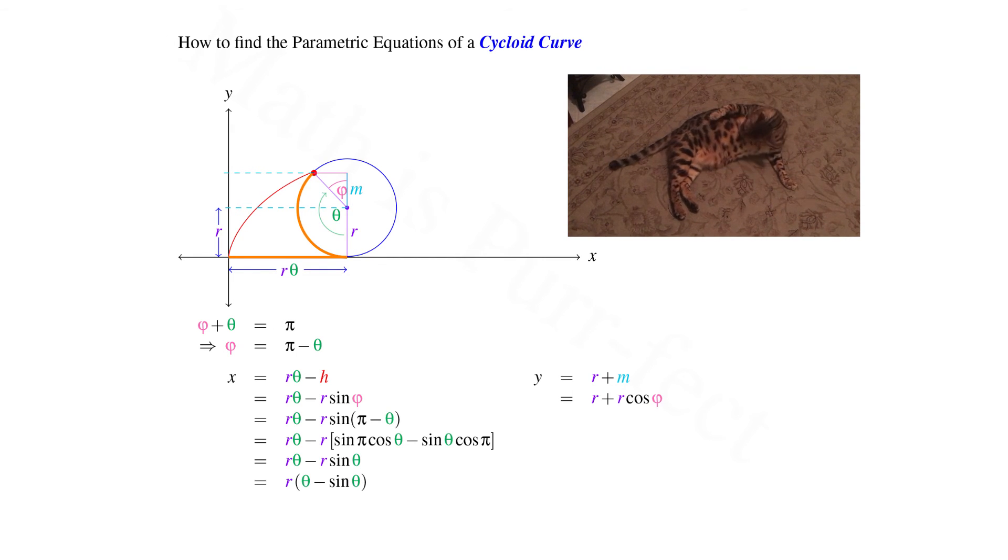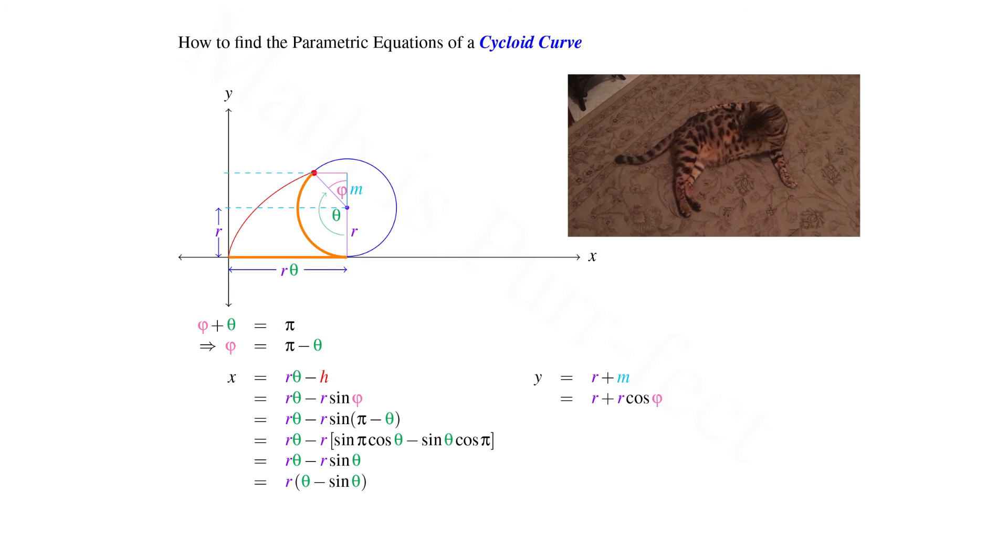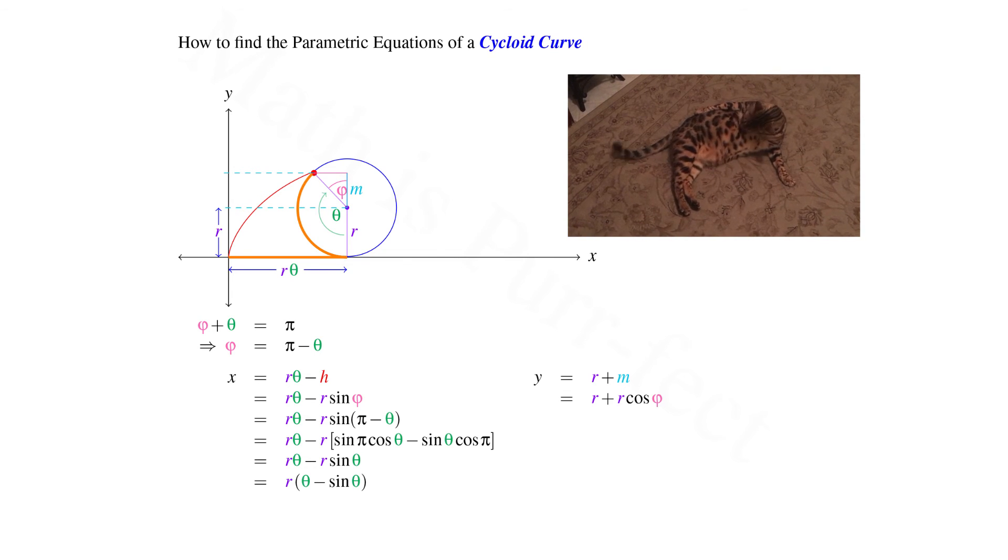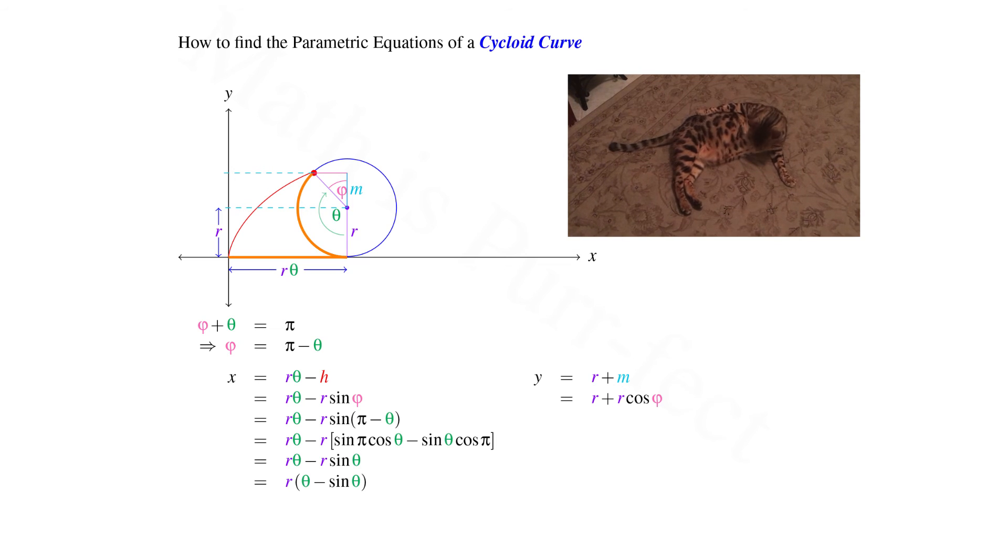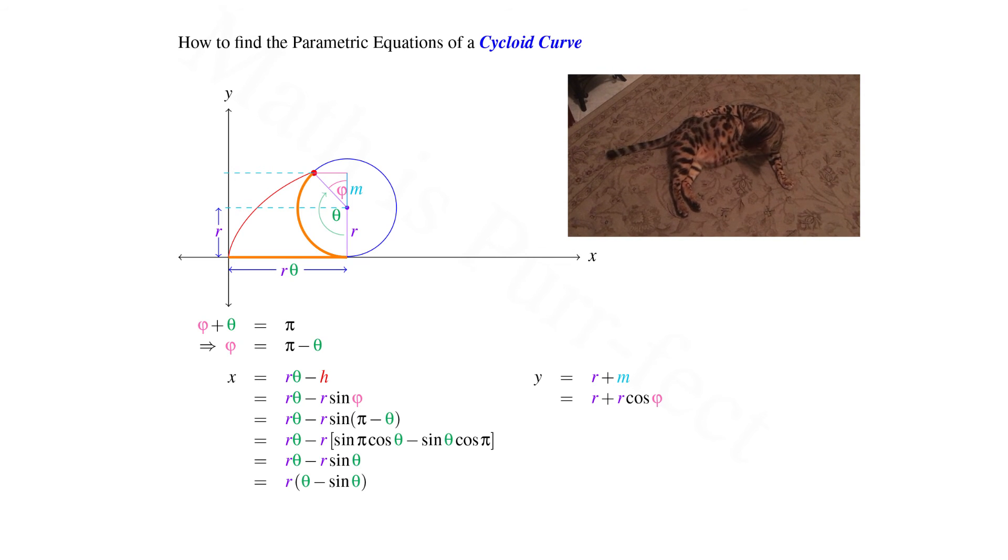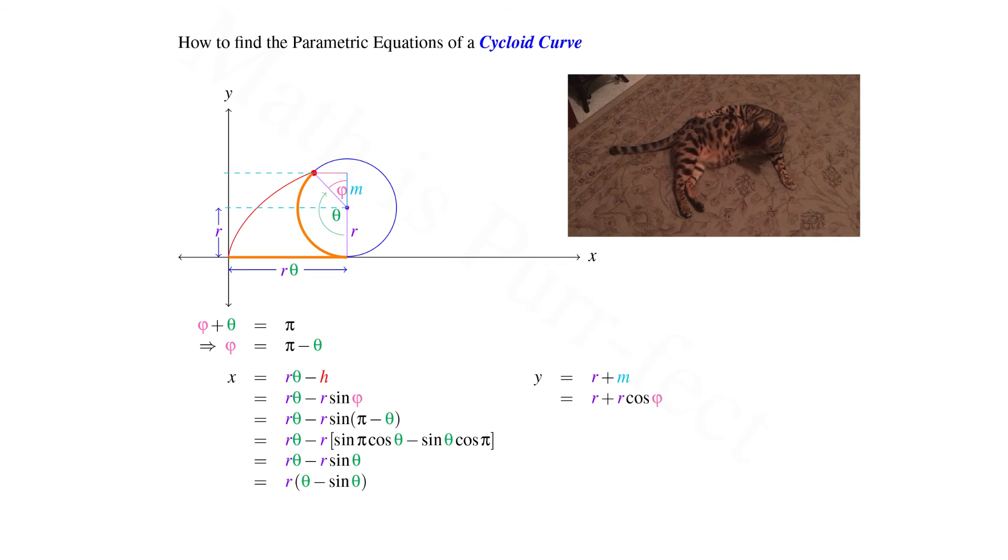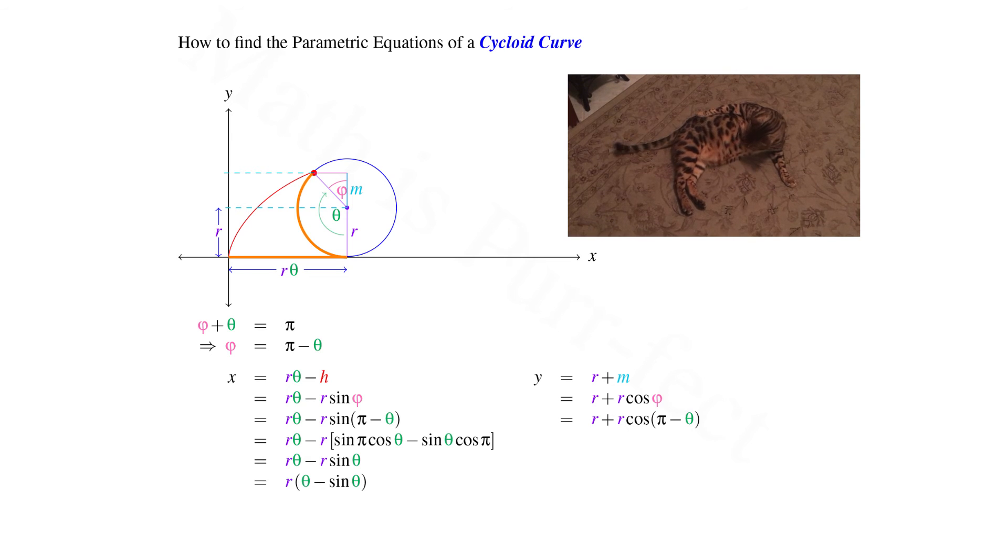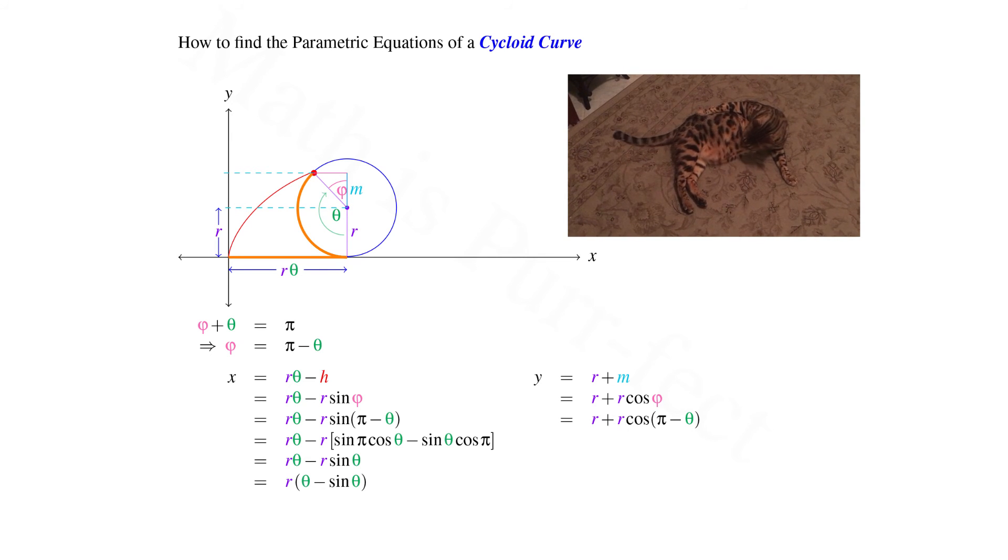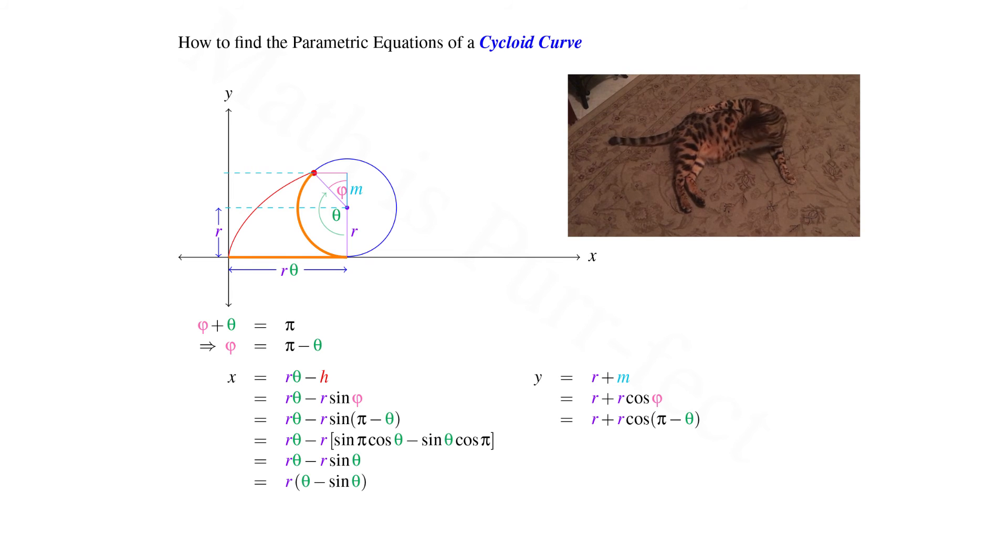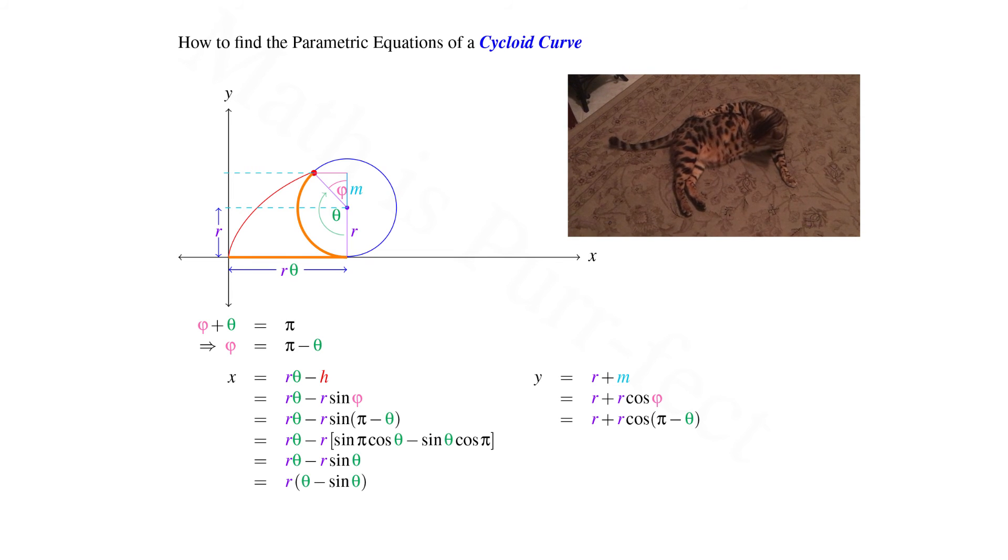Using trigonometry once again, we note that the side m is adjacent to the angle phi, hence y is equal to r plus r times cosine phi. Since phi was found to be pi minus theta, our value for y becomes r plus r times cosine of the quantity, pi minus theta.